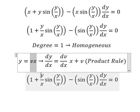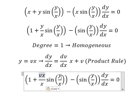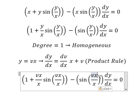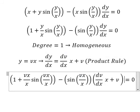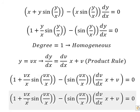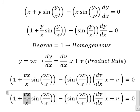So y we change by vx, and dy over dx we change by this one. So x divided by x we have number one.